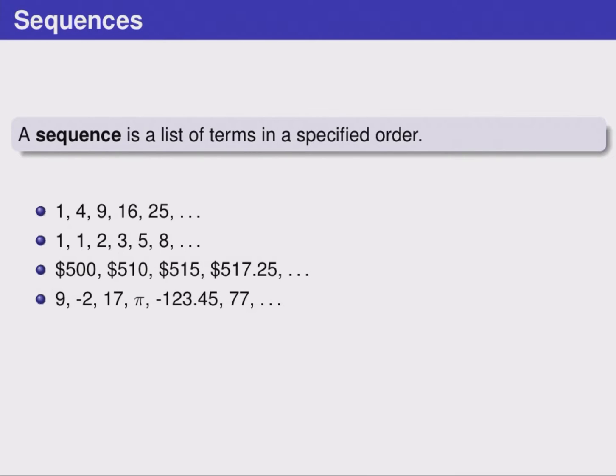But sequences don't have to have any sort of pattern. This one shows a sequence can have any values at all, and it could continue on forever with no particular pattern. As long as those numbers come in a specified order, here 9 is the first one, negative 2 is the second, pi is the fourth, and so on, then this is a sequence.